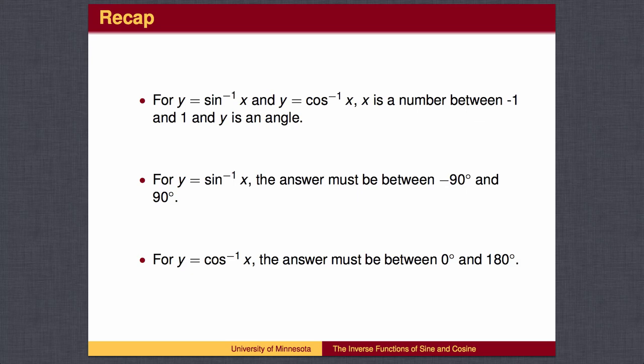The outputs are angles. For inverse sine, the output should be on the right half of the unit circle, between negative 90 degrees and 90 degrees. For inverse cosine, the output should be on the top half of the unit circle, between 0 degrees and 180 degrees.